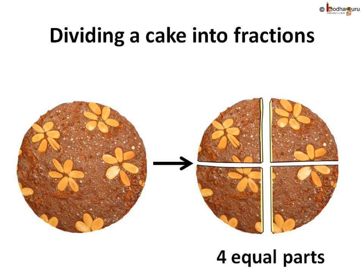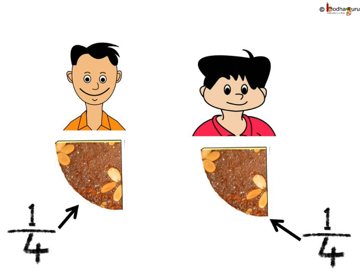For example, if the mother baked a cake and there were four members in the family, she cut the cake into four equal parts and gave one piece to each child. So each child out of the two children got one fourth part.